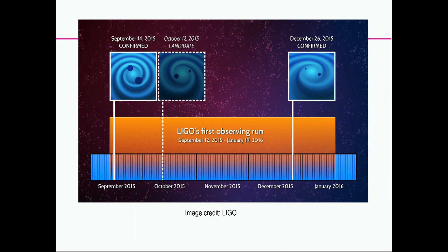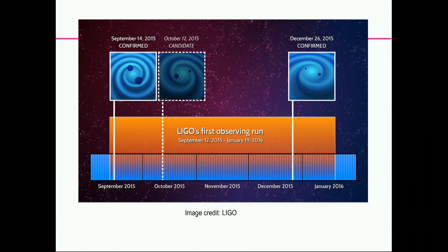That was the first gravitational wave. In October, we think we saw something, but it wasn't that loud so we could not confirm. In December, we saw another one, this one coming from smaller black holes. With smaller black holes, we can see more of the signal because it coalesces at a higher frequency and spends more time in our band. What we did is translate these signals into sound.